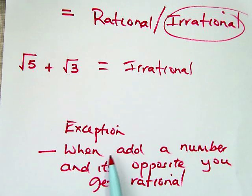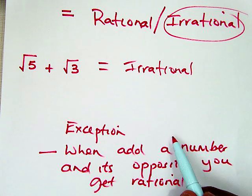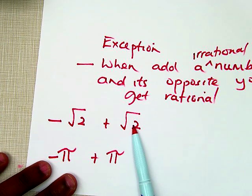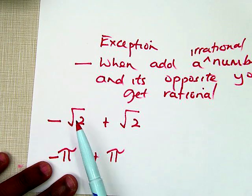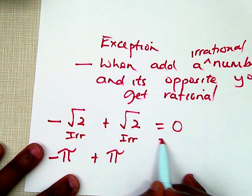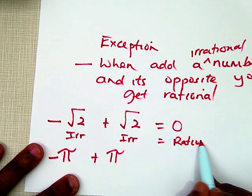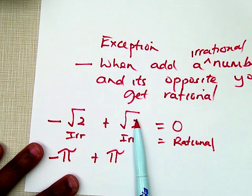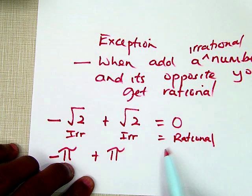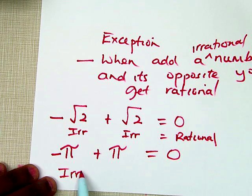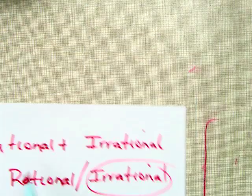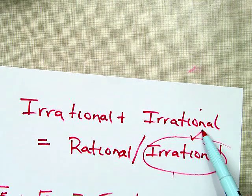When does this happen? This happens when you add an irrational number and its opposite. For example, positive square root of 2, which is irrational, plus negative square root of 2, which is irrational — a positive and negative of the same value equals 0, which is rational. Also, positive pi plus negative pi cancels out to give 0. So the only time irrational plus irrational gives you rational is when you add the opposite of a number. Generally, irrational plus irrational equals irrational.